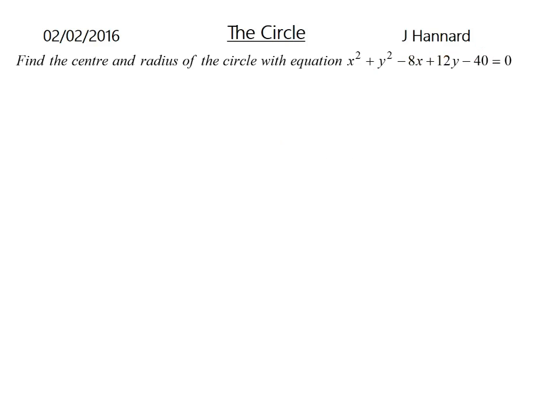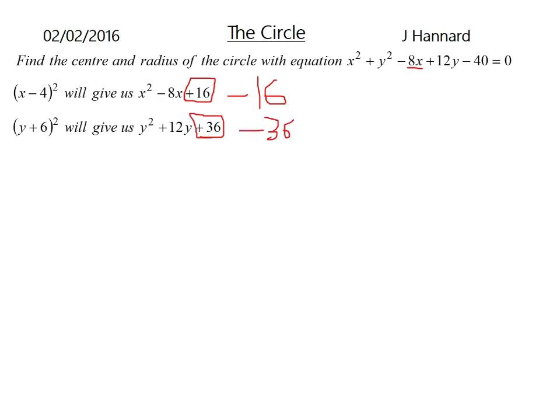We're wanting to find the center and the radius of the circle with the equation x squared plus y squared minus 8x plus 12y minus 40 equals 0. So remember, we're half the coefficient of x. So we'll get x minus 4 all squared. And that will give us x squared minus 8x plus 16. So we've got our 8x, we've got our x squared, but we've got this unwanted plus 16. So we're going to take off 16 at the end because it's an unwanted square. Same with that. We get y plus 6 squared. Half of 12 is 6. y plus 6 squared will give us that, but we've got that unwanted plus 36. So we're going to minus 36 off at the end.